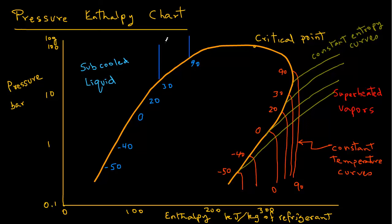On the left hand side we don't actually see these curves on the pH chart but we will draw these vertical lines from these various temperature values. From 90, 30, 20, these are vertical lines and these are the constant temperature lines in the subcooled region.